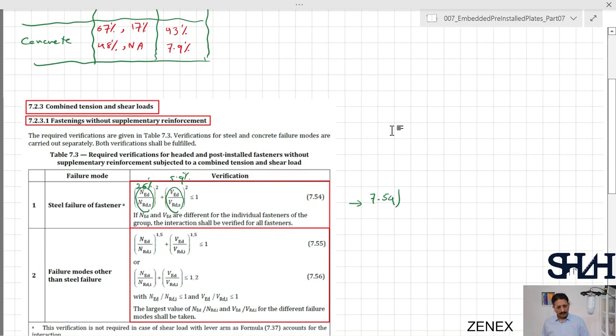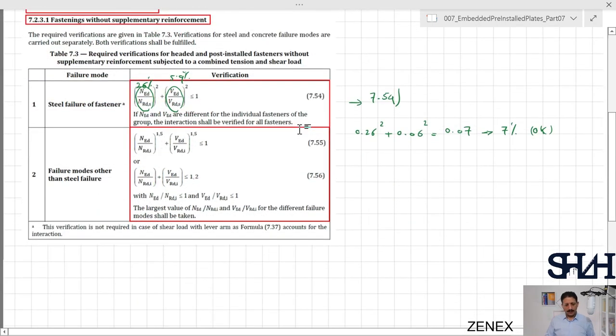Utilization ratio for tension in steel is 26 percent and for shear it is 5.9 percent. Then equation 7.54, we can verify: 0.26 squared plus 0.06 squared equals 0.07 which is 7 percent, that's totally fine, quite low. Then it comes to the other than steel, which concrete is applied.